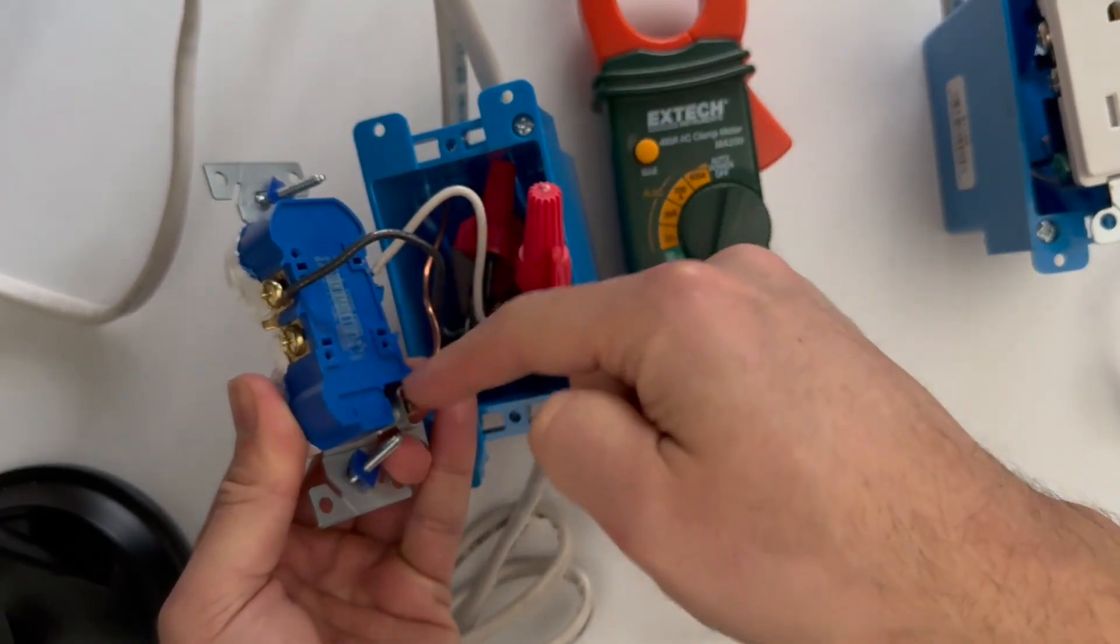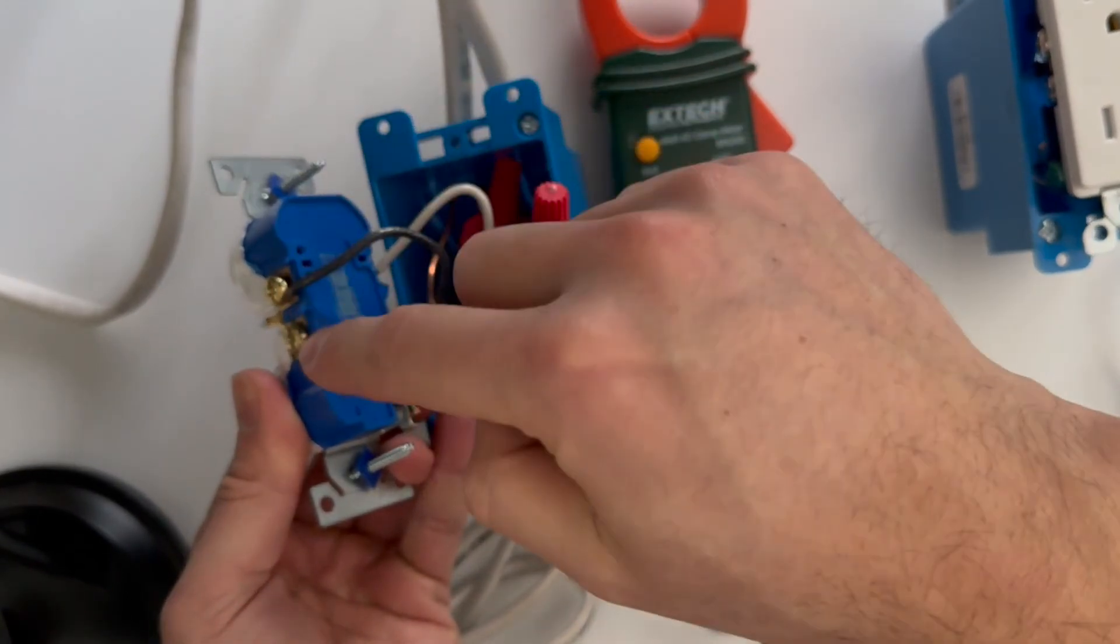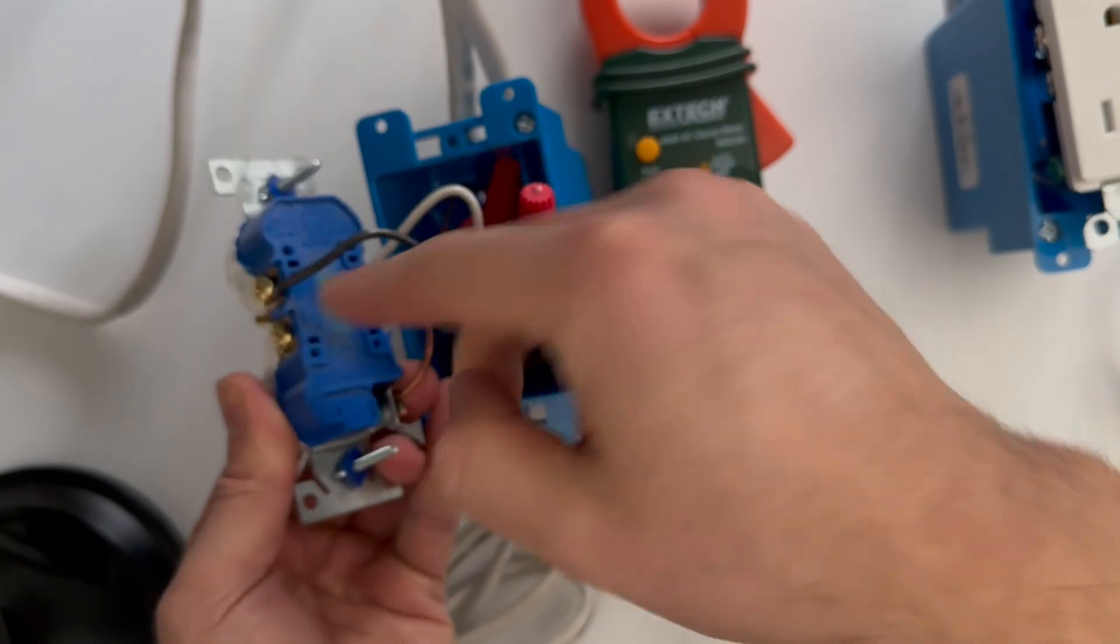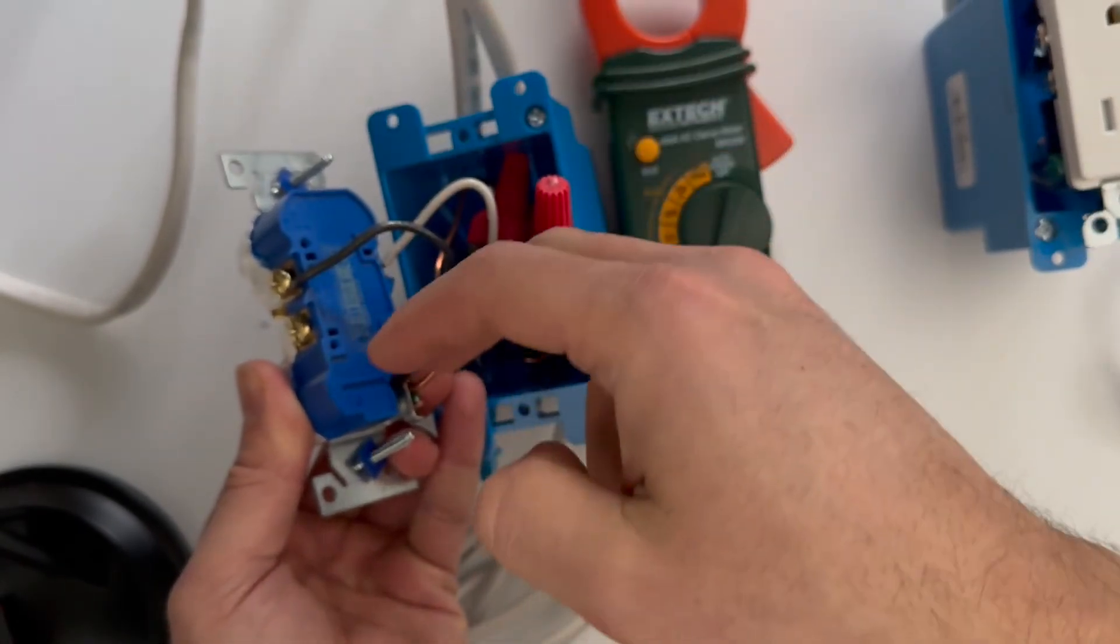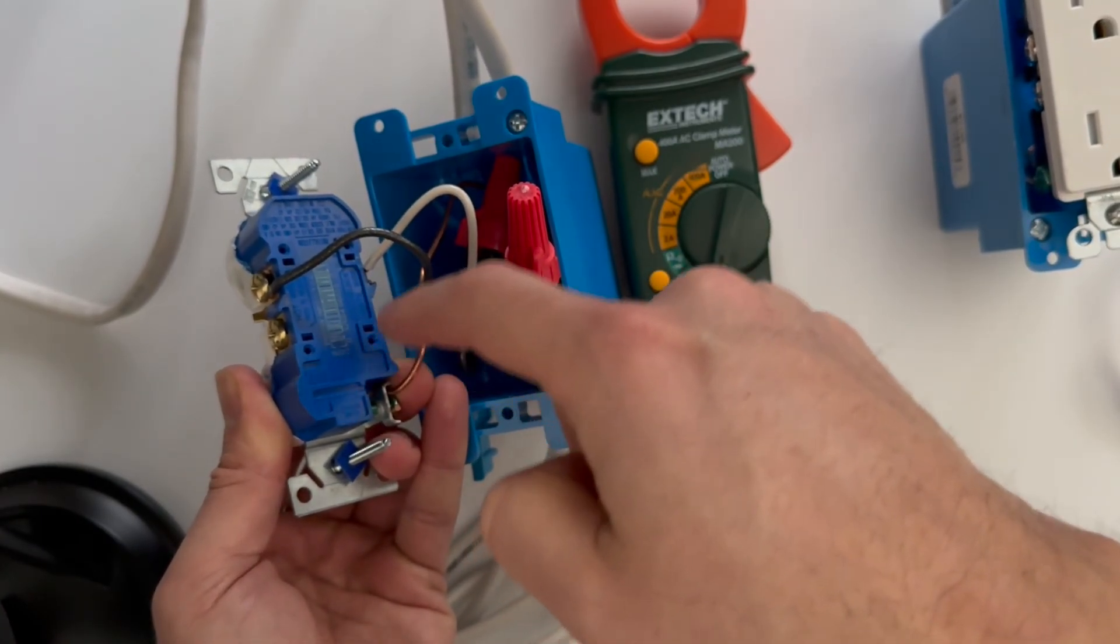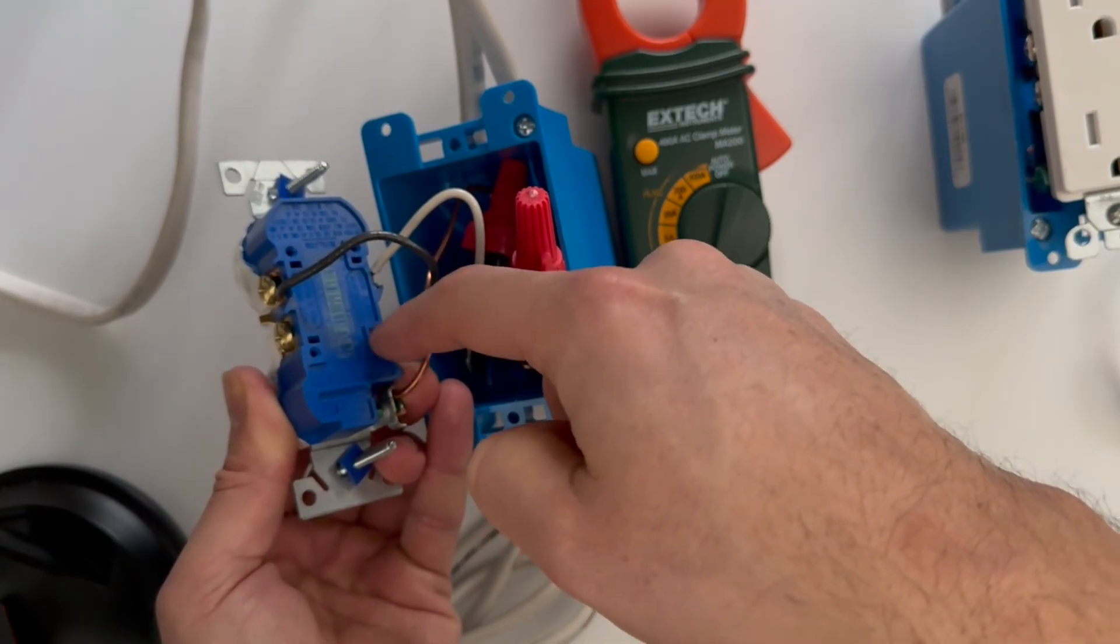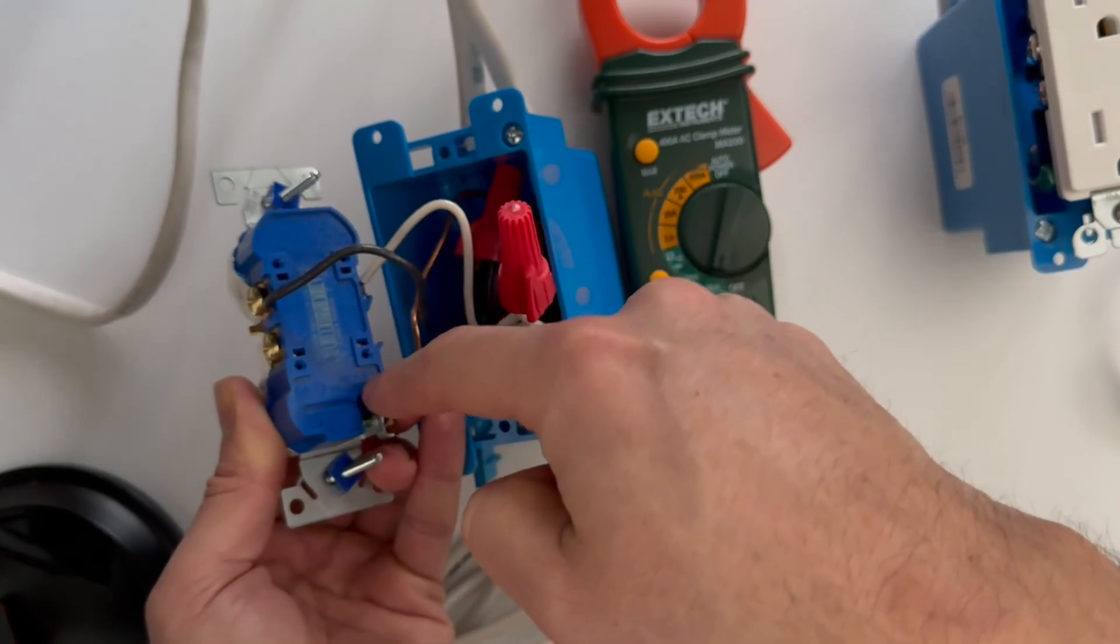Sometimes you will see an outlet can actually have four pairs of wire. You could have two backstabbed hot wires, two side-mounted, and then you will have four other neutrals here. One could have been loose here too.